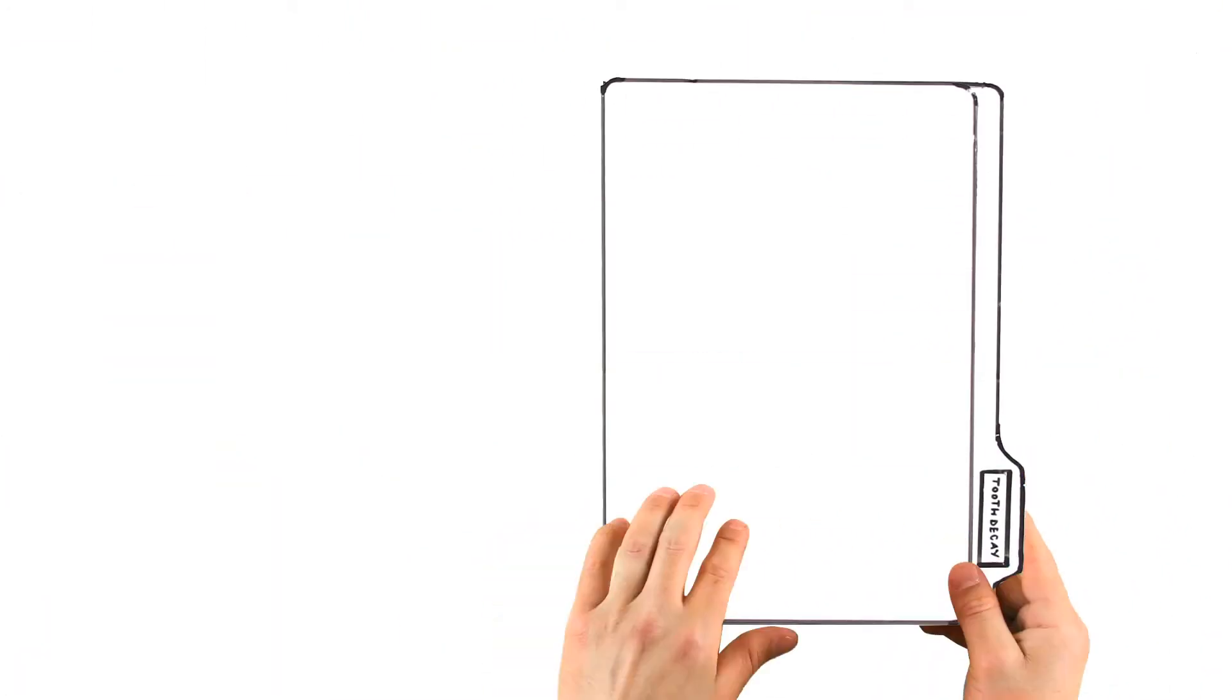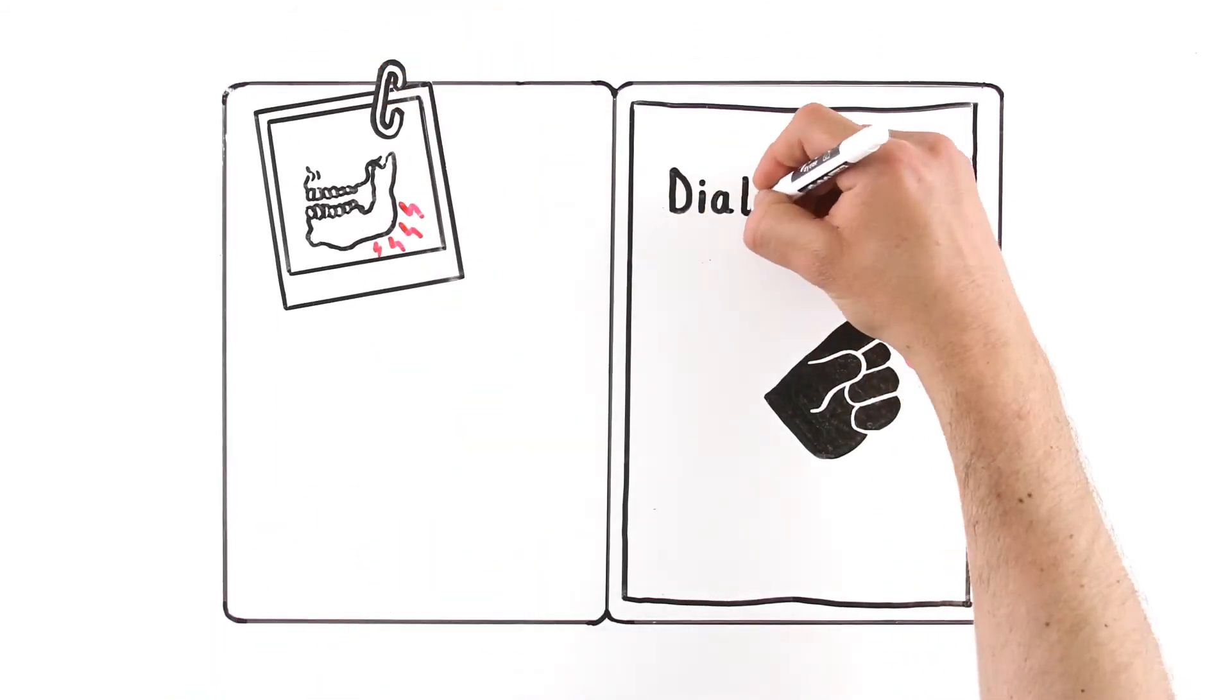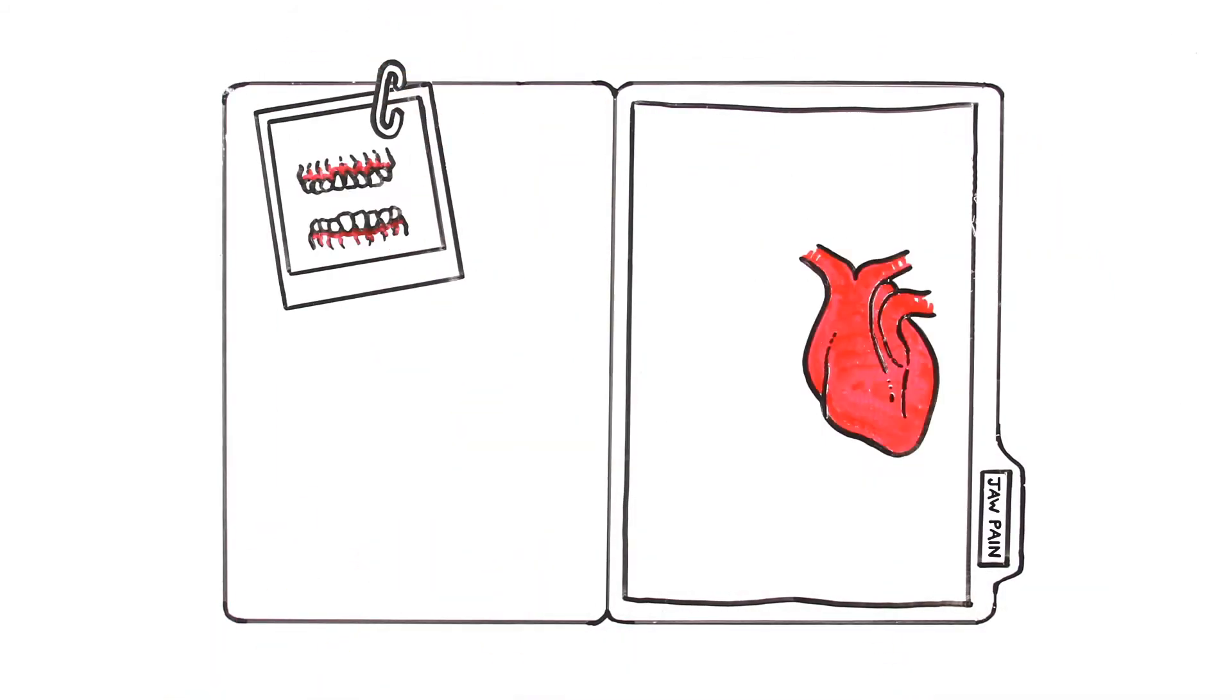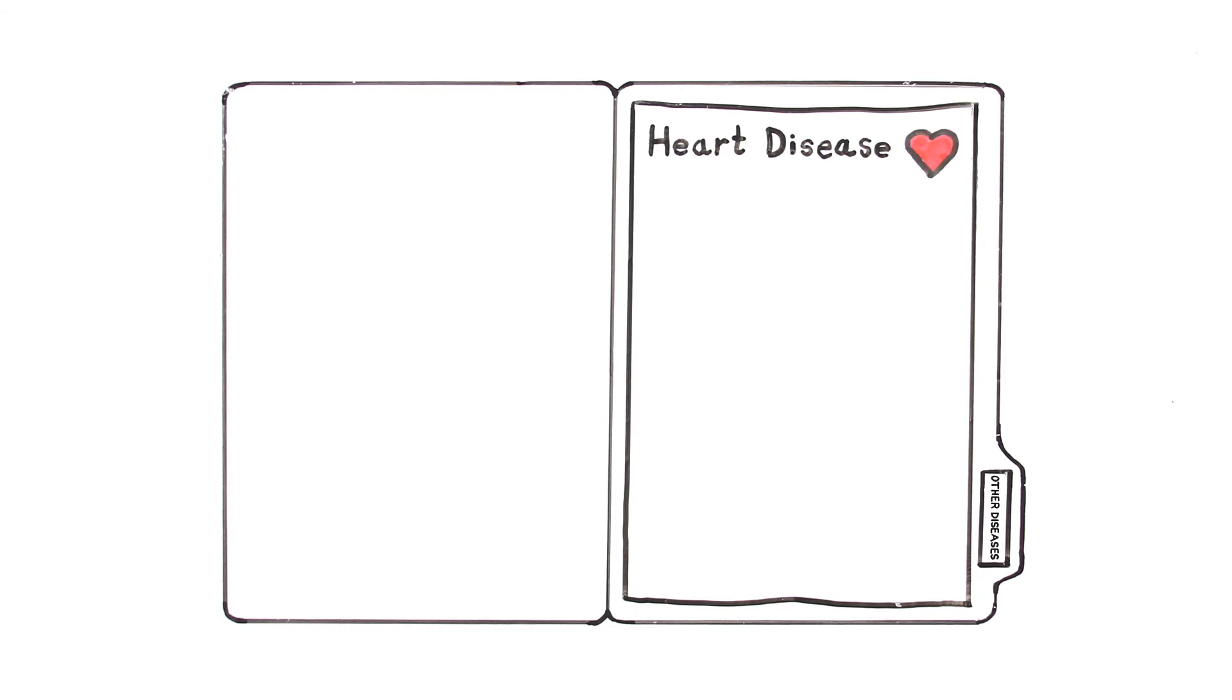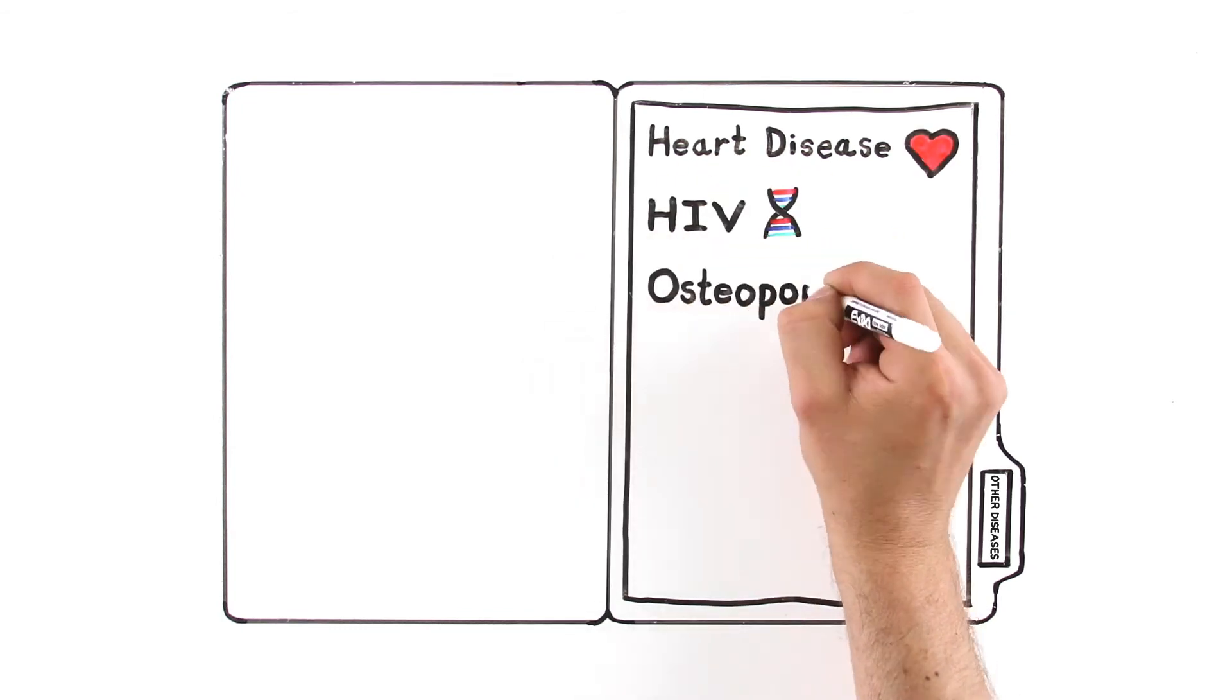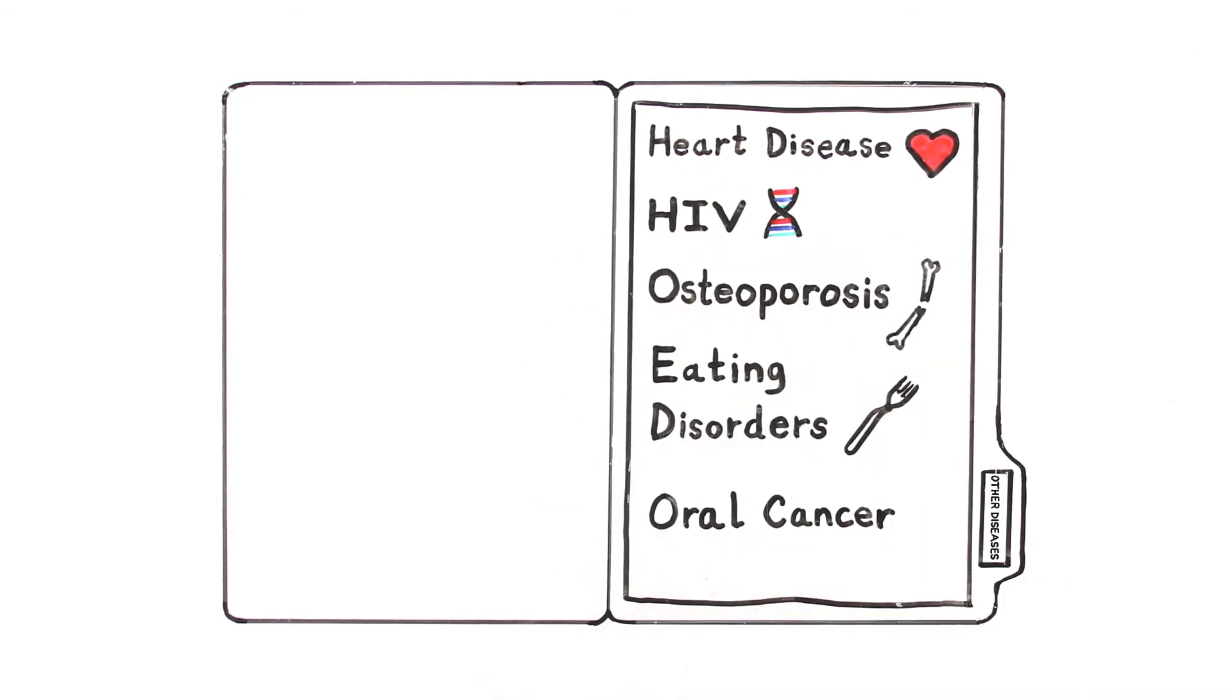For instance, dry mouth and a lot of tooth decay could be a sign of diabetes. Inflammation of the gums and jaw pain could be associated with heart disease. Other diseases with oral signs and symptoms include HIV, osteoporosis, eating disorders, oral cancer, and the list goes on.